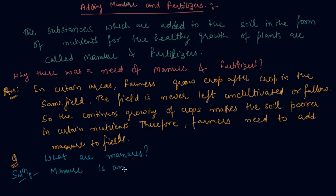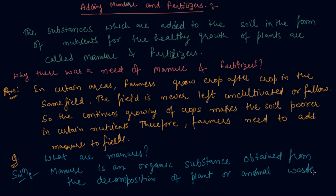Manure is an organic substance obtained from the decomposition of plant or animal waste. Now I hope that you are pretty clear about what are manures. These are the decomposed material obtained from plant or animal waste.